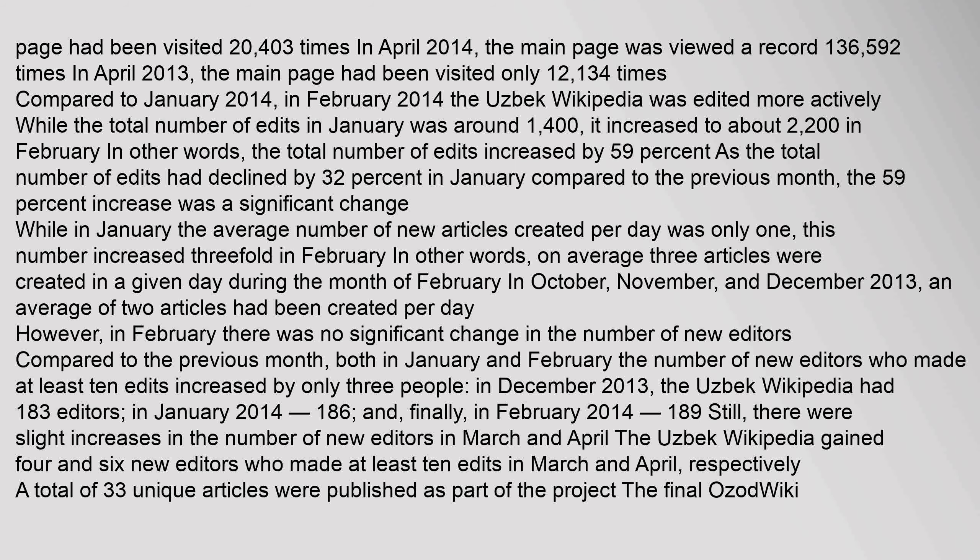Both in January and February, the number of new editors who made at least 10 edits increased by only three people. In December 2013, the Uzbek Wikipedia had 183 editors; in January 2014, 186; and in February 2014, 189. Still, there were slight increases in new editors in March and April — gaining four and six new editors who made at least 10 edits, respectively. A total of 33 unique articles were published as part of the project. The final Ozodwiki article was published in January 2016.